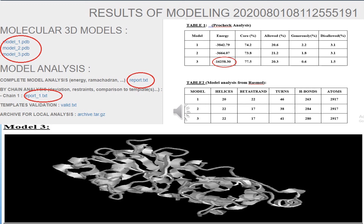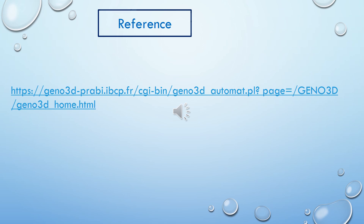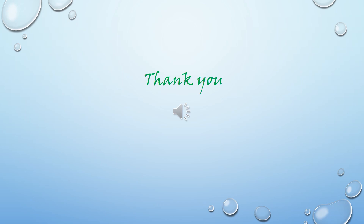The model with the minimum energy will be the most stable one. In this practical, model three has the lowest energy, so we can conclude that model three is the most stable model for this particular protein modeling. If you want to know more about homology modeling, go through this link and you will get all the information for modeling any protein. Practice it. Thank you.